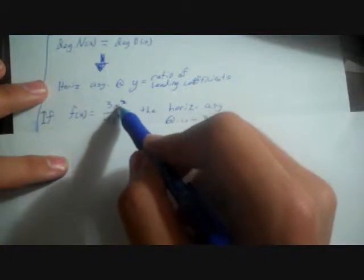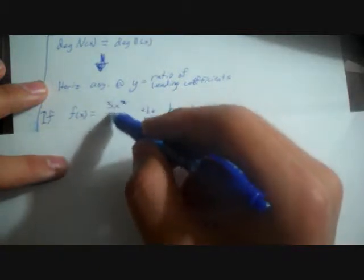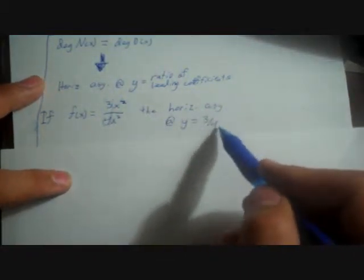Rule 2: If the degree of the numerator equals the degree of the denominator, then the horizontal asymptote is at y equals the ratio of the leading coefficients of the numerator and denominator. The leading coefficients are the coefficients of the highest-degree terms. For example, if both degrees are 2 with leading coefficients 3 and 4, then the horizontal asymptote is at y = 3/4.